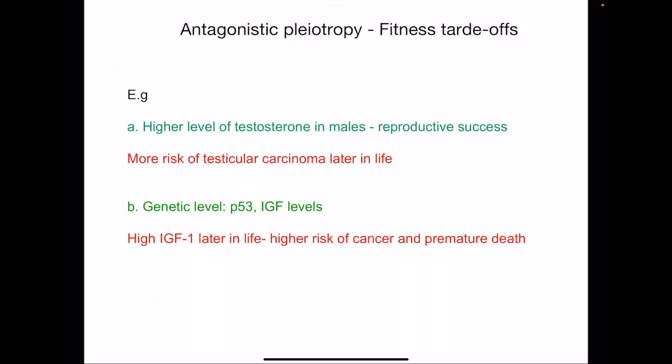Let's see some examples of antagonistic pleiotropy. Higher levels of testosterone in males: if males have higher testosterone, chances of reproductive success are high in reproductive life. But later on, same high levels of testosterone lead to more risk of testicular carcinoma. It's kind of a trade-off, beneficial in the beginning of life but later harmful. Similarly, high levels of IGF: in the beginning it's very good for growth, but IGF levels have higher risk of cancer and premature death. So high levels later in life is not good.